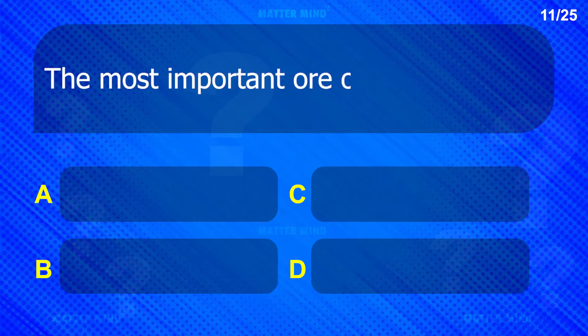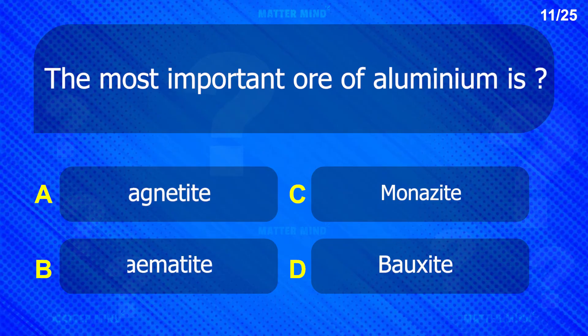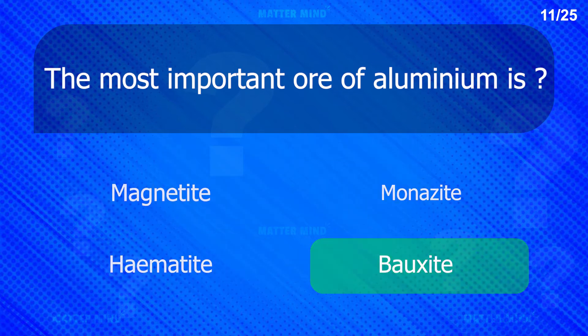The most important ore of aluminium is: Bauxite.